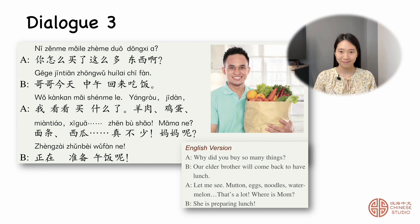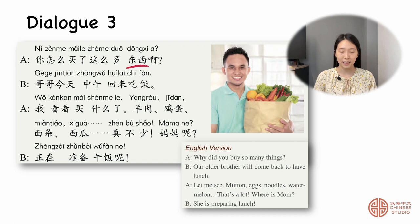Now I want to explain some terms. 这么多 — so many. 东西 — stuff. 羊肉 — mutton. 鸡蛋 — egg. 西瓜 — watermelon. 正在 — right now.